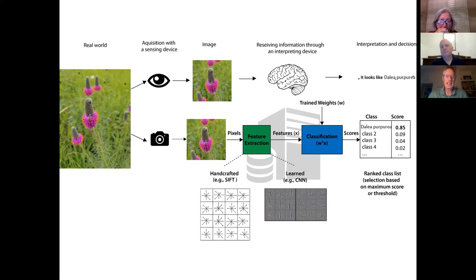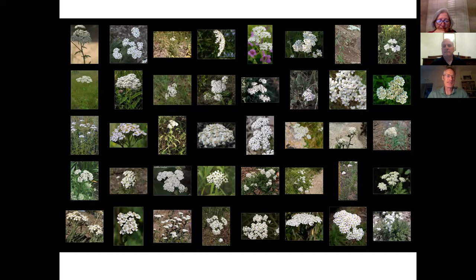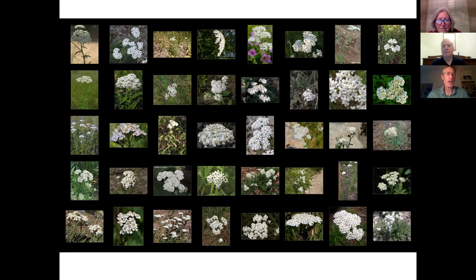The diversity helps the model determine what part of the photo is most important to identify the species and try to filter out background differences or lighting. If it sees enough examples, it will figure out what's really unique about the species. Here are just some of the 1,082 images used to train for one species — Erichaelia melifolium — showing different angles, lighting, and backgrounds.